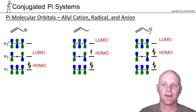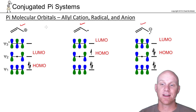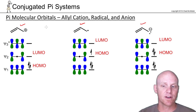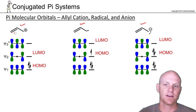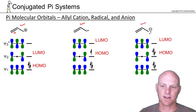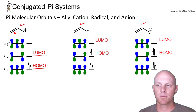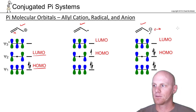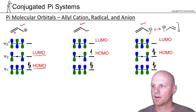Now we'll compare the allyl cation with the allyl radical with the allyl anion. The big difference here is that the diagrams are actually exactly the same — we still have three p-orbitals in a conjugated system in every single case. The difference will be the number of electrons. The allyl cation has just the pair of pi electrons, so two electrons. That makes Ψ1 the HOMO and Ψ2 the LUMO. For the anion, if you draw an additional resonance structure, you can show the lone pair as part of the pi system.